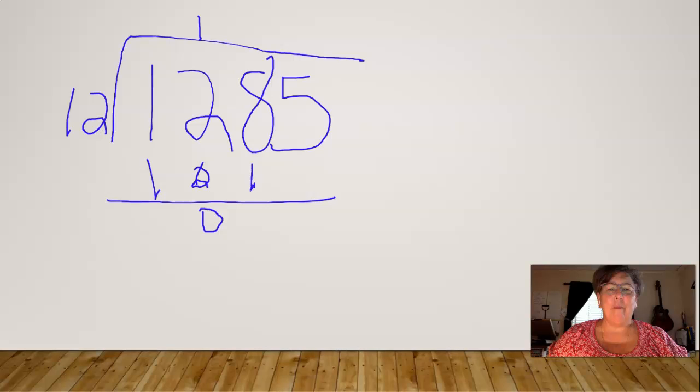Bring down the 8. 12 will go into 8 zero times. Zero times 12 is zero. Subtract and I'll get an 8, then bring down the 5.